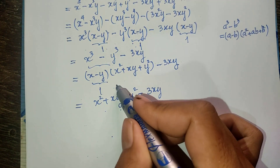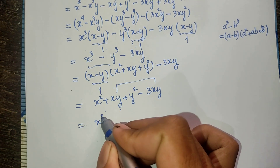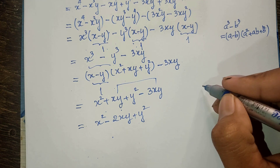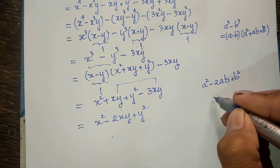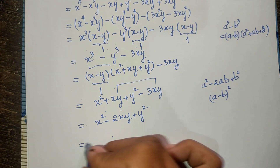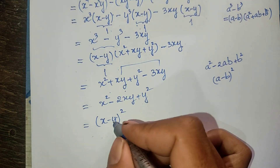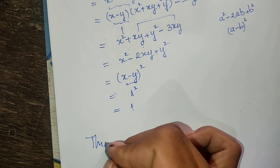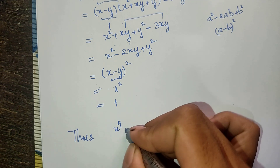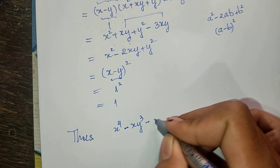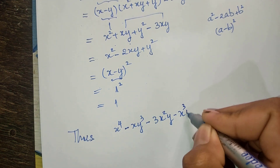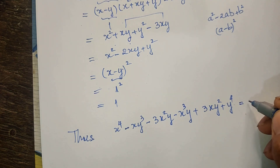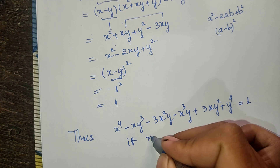Substituting x minus y equals 1, this becomes 1 times (x squared plus xy plus y squared) minus 3xy, which gives x squared plus xy plus y squared minus 3xy. Simplifying, we get x squared minus 2xy plus y squared, which equals (x minus y) squared. Replacing x minus y by 1, we get 1 squared, which equals 1. Therefore, the expression x power 4 minus xy power 3 minus 3x squared y minus x power 3 y plus 3xy squared plus y power 4 equals 1, given x minus y equals 1.